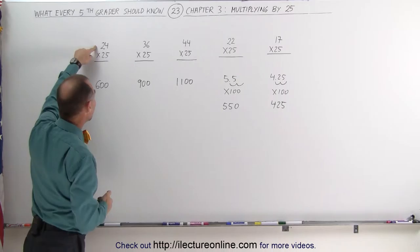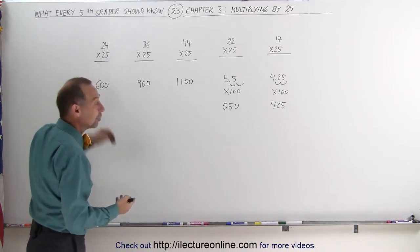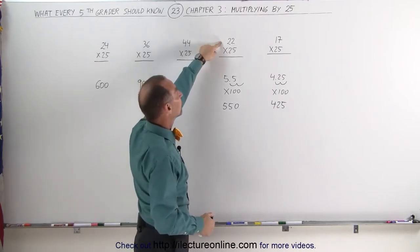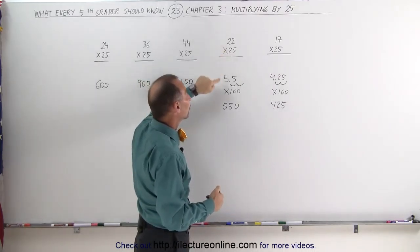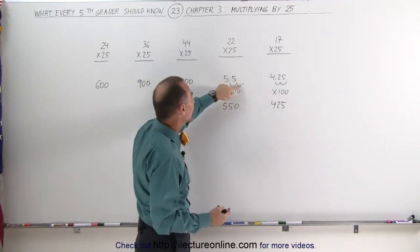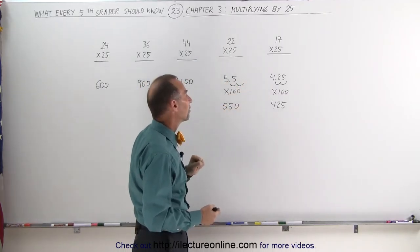you take the number, divide it by 4, add two zeros if you can cleanly divide the number by 4, or if you can't like this, you take 22 divided by 4, which is 5.5, add two zeros, really multiply times 100, means move the decimal place over two places, you get 550.